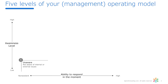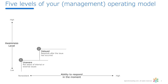Level one is just unaware — your information systems and management are not aware of either internal operational issues or external ones. The next step is delayed: you know what's going on, but your ability to respond is delayed, long after the event has occurred.